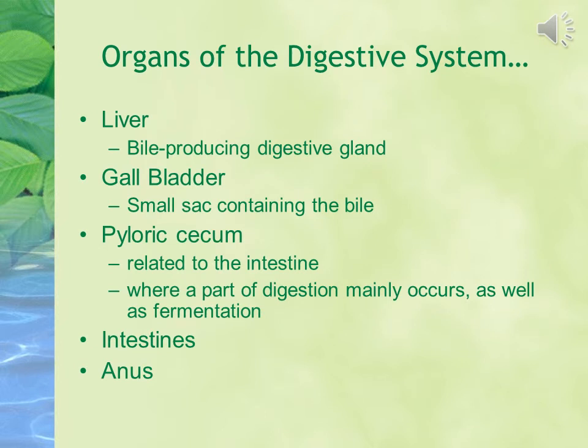Other organs of the digestive system include the liver, gallbladder, pyloric cecum, intestine, and anus. The liver is a bile-producing digestive gland. The gallbladder is a small sac containing bile. The pyloric cecum is related to the intestine where digestion mainly occurs, and fermentation also occurs there. The anus is for the removal of waste from the body.